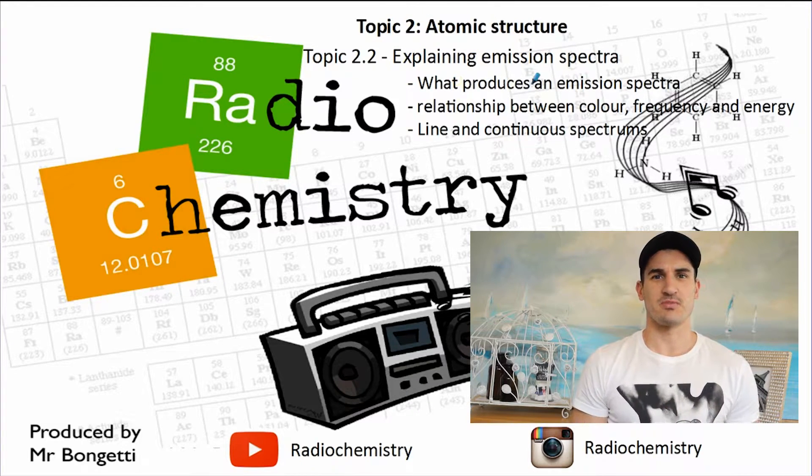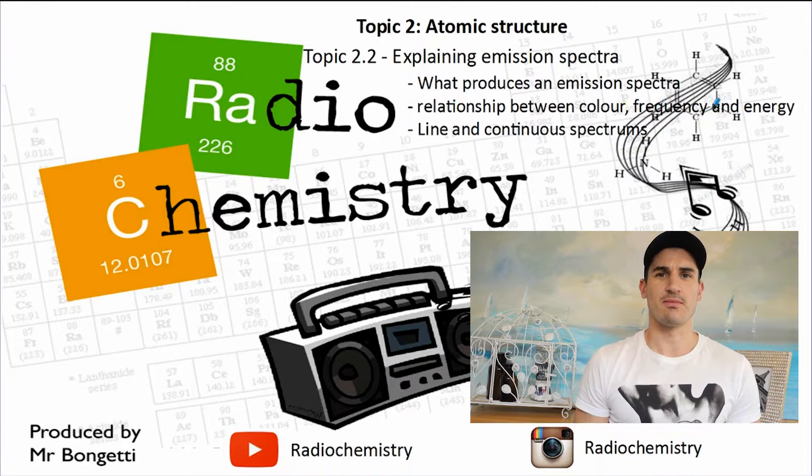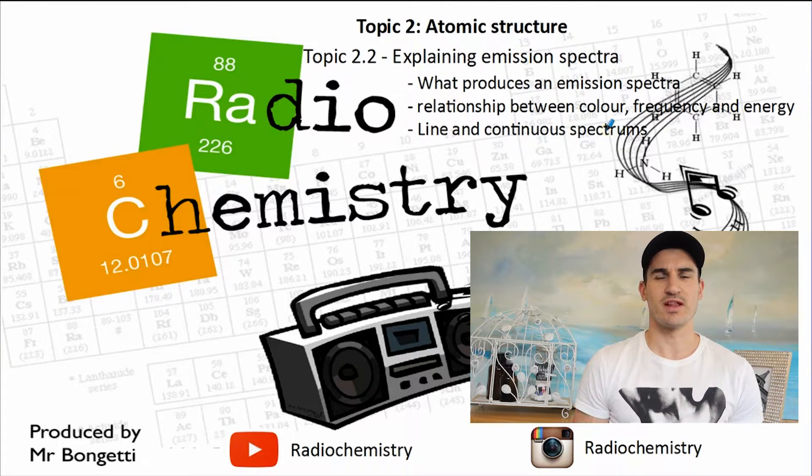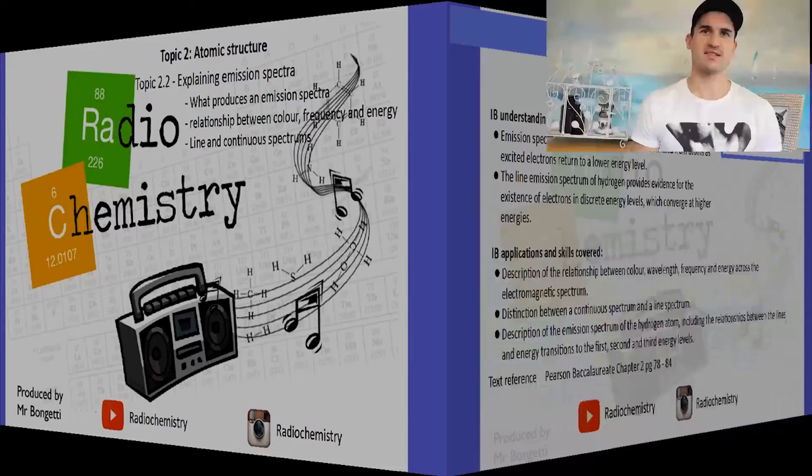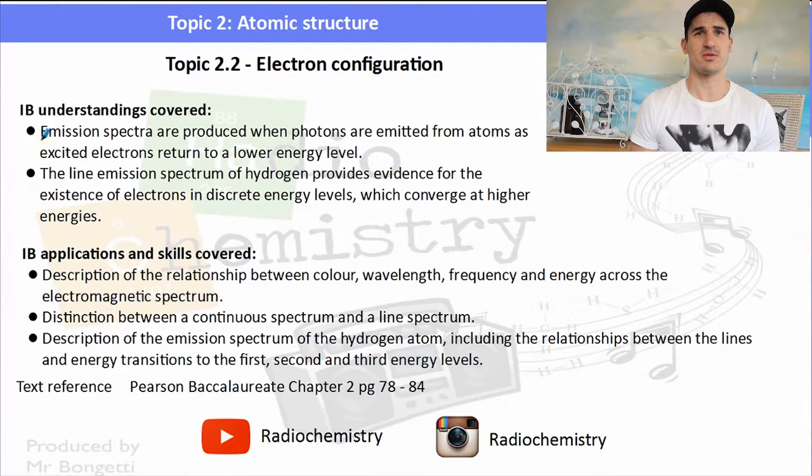Topic 2.2 explaining emission spectra and we're going to build on some of the knowledge that you might have gained doing a flame test practical. The IB understandings is we need to know what an emission spectrum is and how it is produced, and then we need to have an understanding of hydrogen's emission spectrum. We need to be able to describe the relationship between wavelength, color and frequency and make the distinction between a continuous and line spectrum.